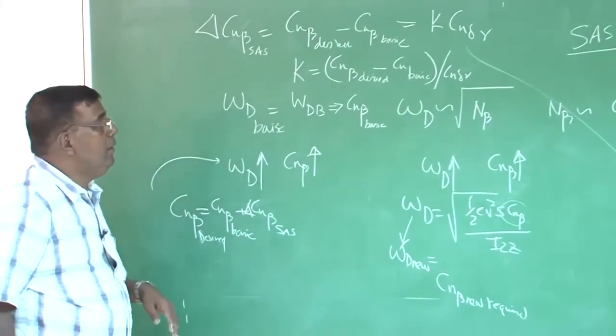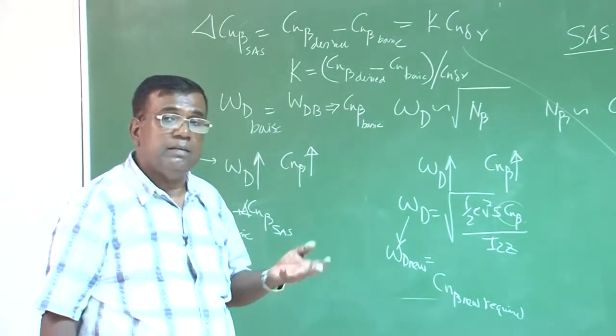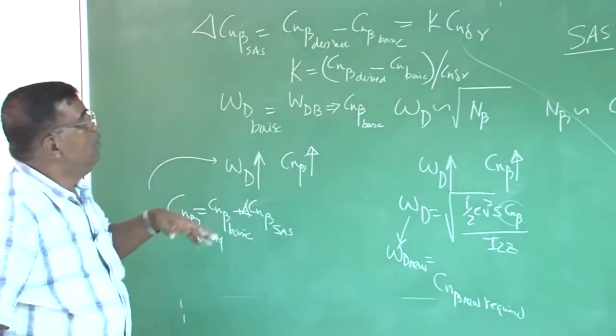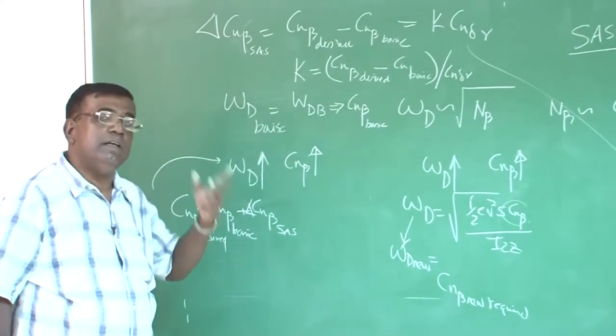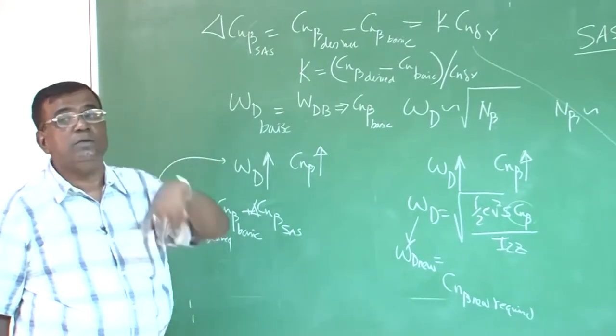should be equal to c n beta desired minus c n beta basic and this is equal to k c n delta r, it has come from here. So, I can easily find out k is c n beta desired or required minus c n beta divided by c n delta r. So, I know what value of k is required, but always remember, k is too high, it may make the system unstable.